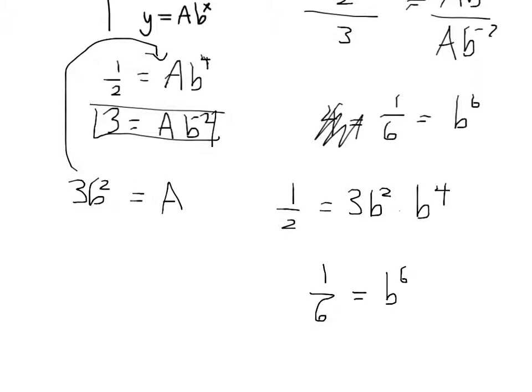Now, another thing is, if you do, so B is 1 sixth to the 1 sixth. Right. And then, of course, A is 3... 3 times 1 sixth to the 1 sixth to the 1 third. Yeah. Right.